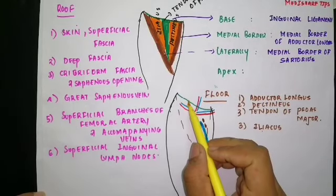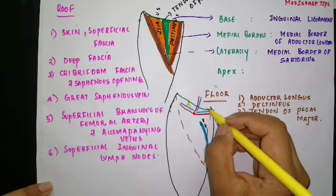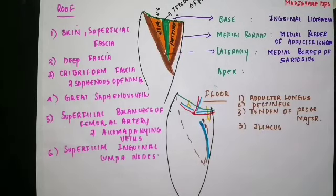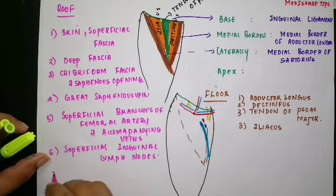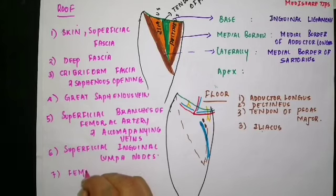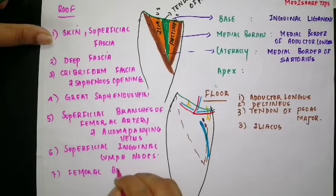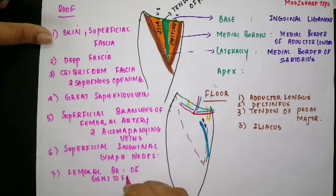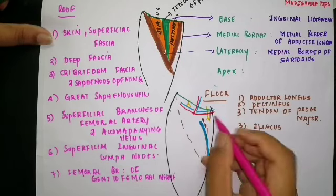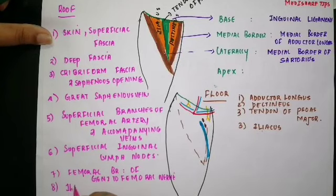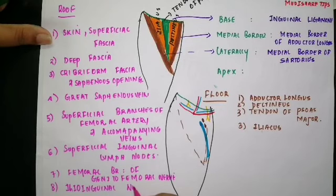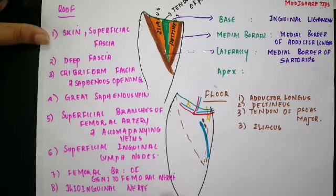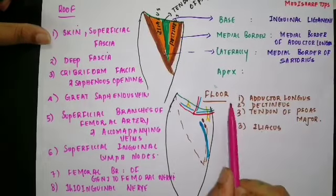Two nerves also contribute to the roof: the femoral branch of the genitofemoral nerve and the ilio-inguinal nerve. So we have now discussed the boundaries, the floor, and the roof of the triangle.